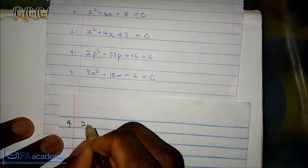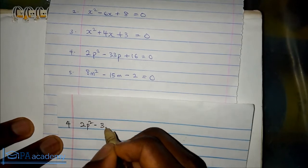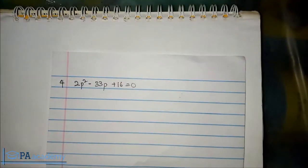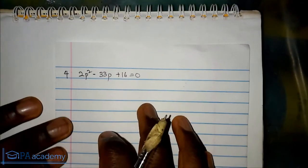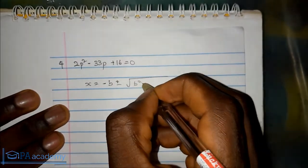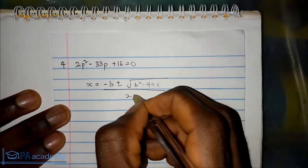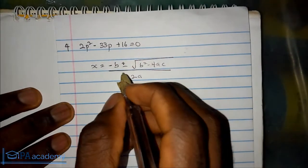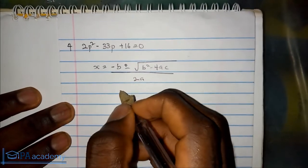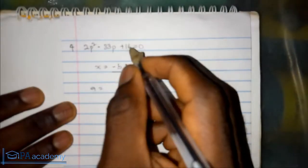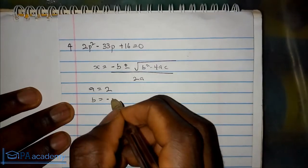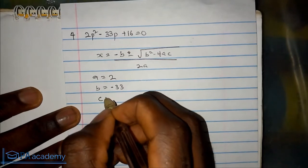For number 4 we have 2p squared minus 33p plus 16 equals 0. We are going to find the value of p using the quadratic formula. The formula is p equals minus b plus or minus square root of b squared minus 4ac over 2a. Now we'll bring out the value of a, b and c. The value of a is 2, b is minus 33, and c is 16.